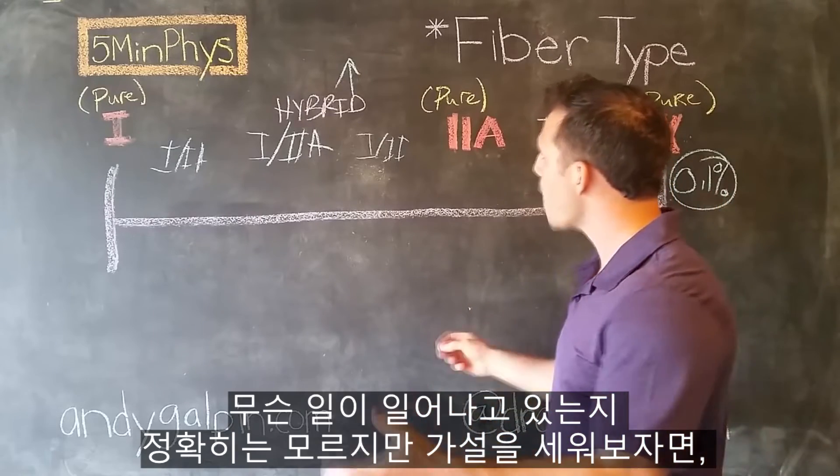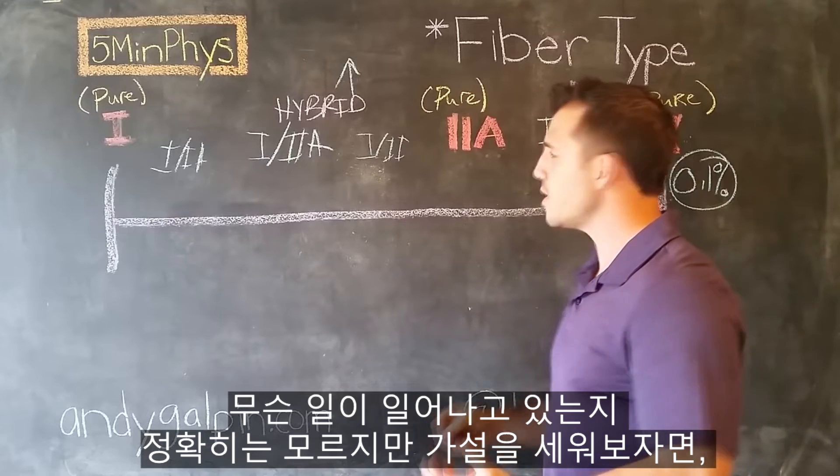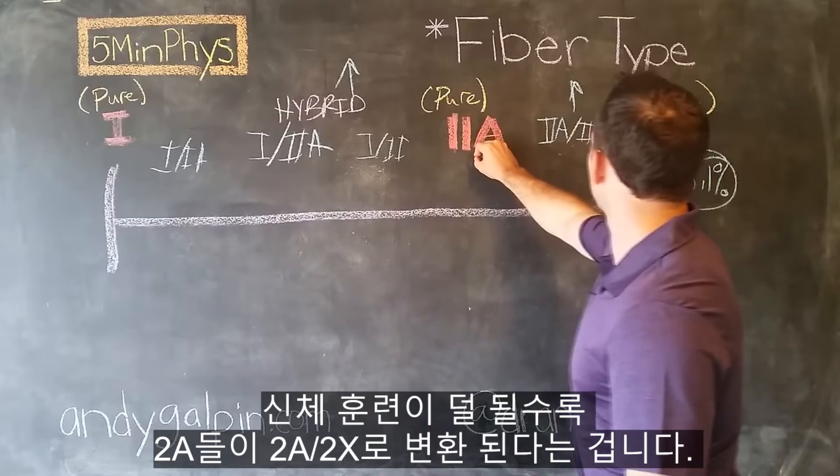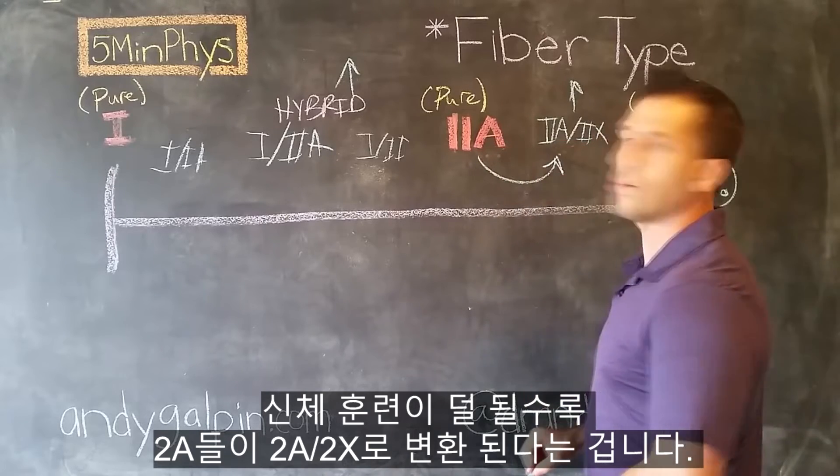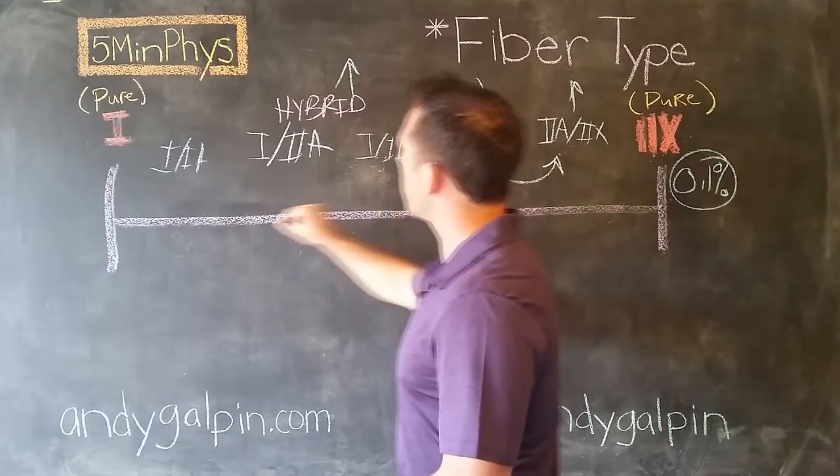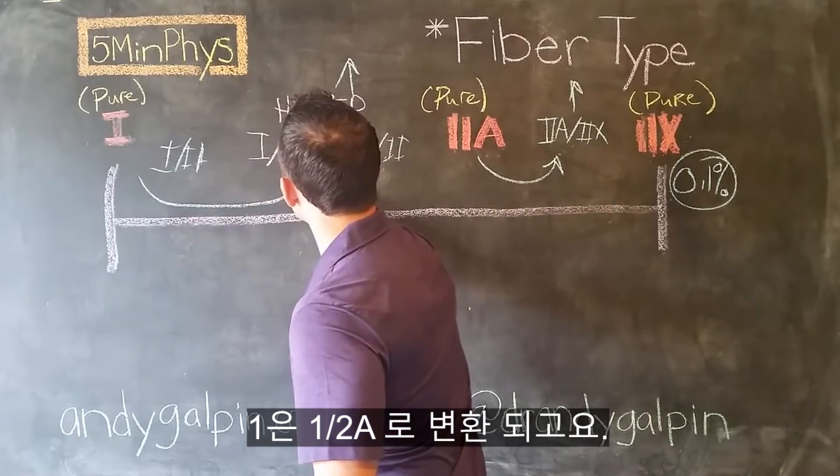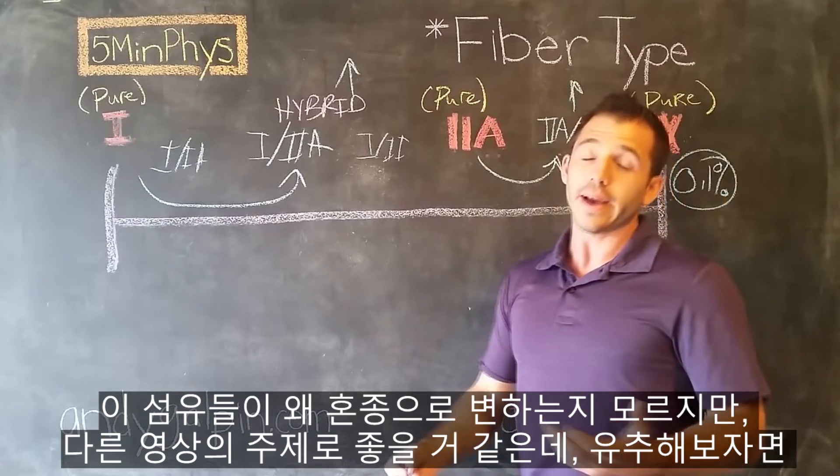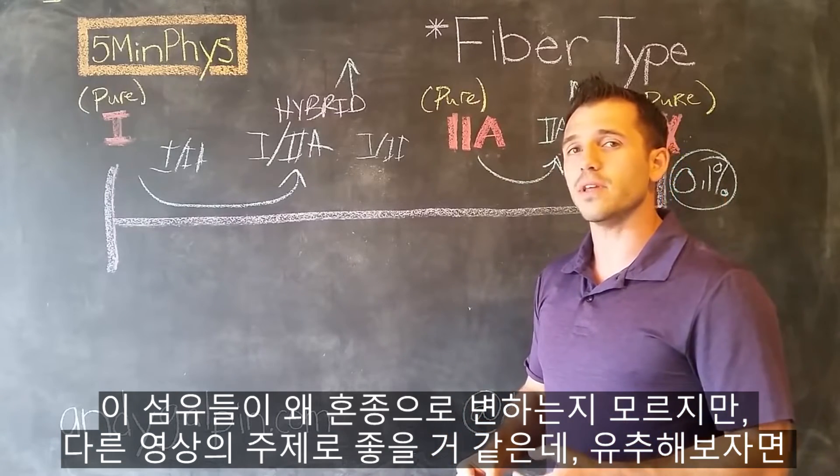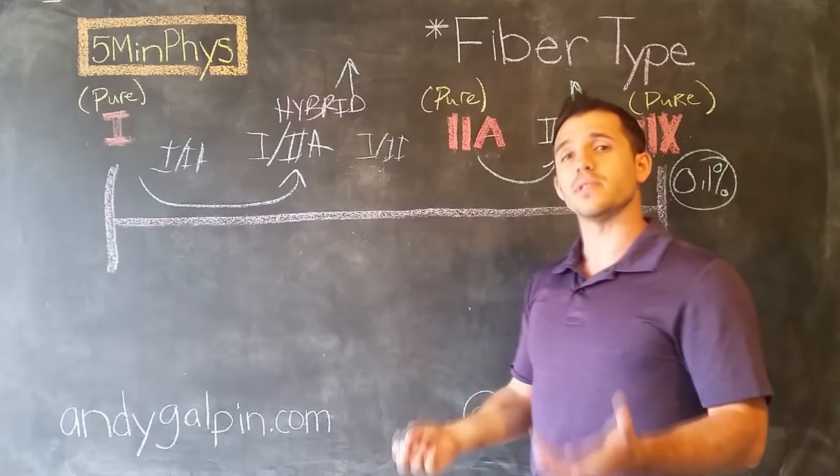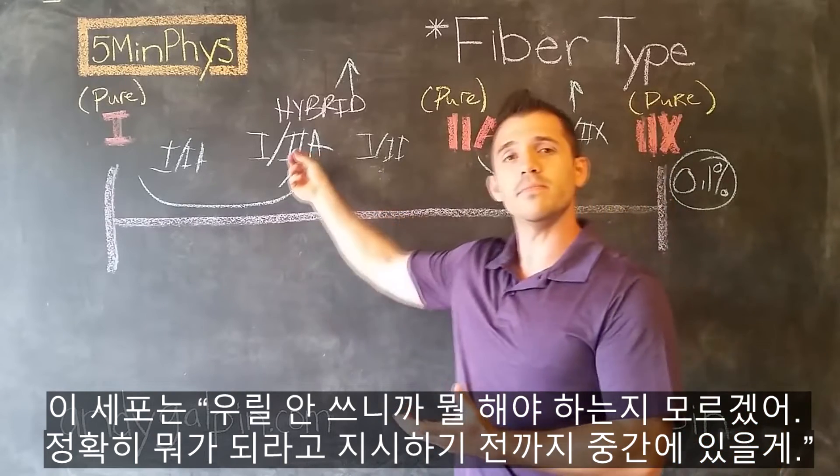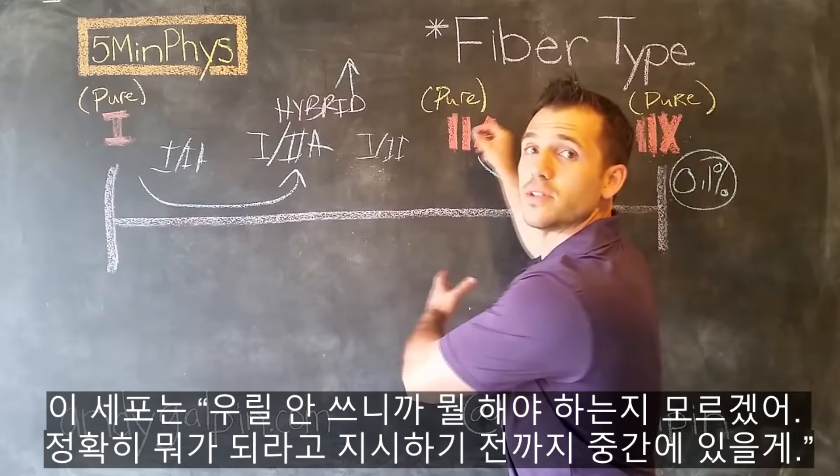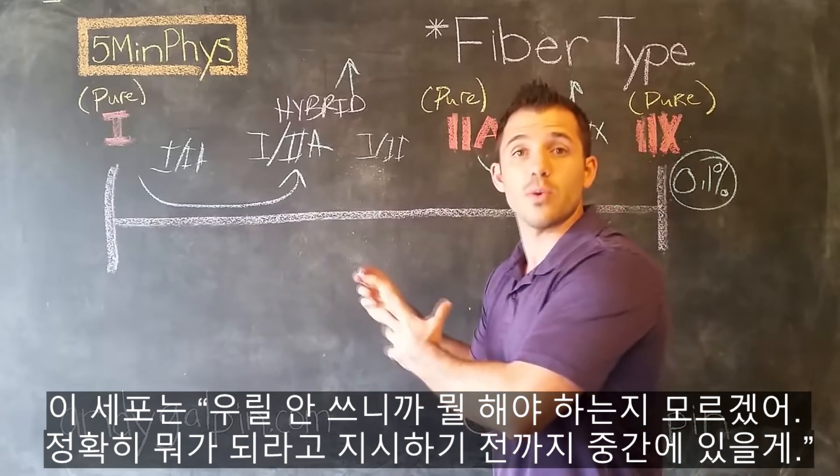So basically what's happening is, we can theorize that as you become less physically trained, your 2As start converting into 2A 2X. Your 1s start being converted into 1 2A 2X. And we don't know exactly why these fibers turn into hybrids. The quick answer is, potentially, it's sort of saying, you aren't using us, so you don't know what you want us to do.